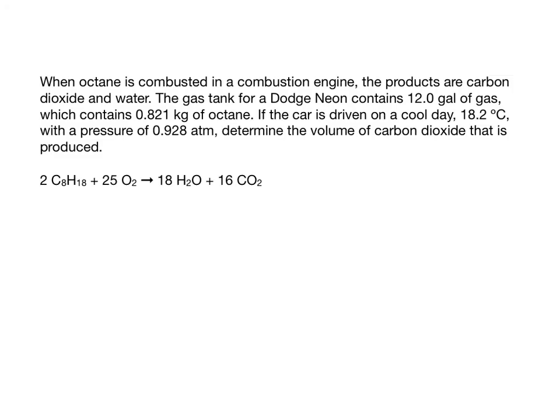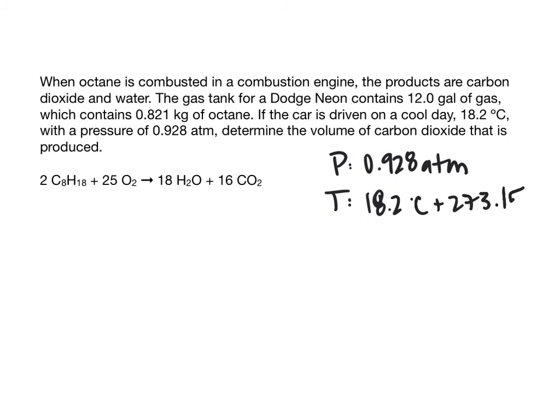Another example: when octane undergoes combustion, the products are carbon dioxide and water. A gas tank for a Dodge Neon contains 12 gallons of gas with 0.821 kilograms of octane. If the car is driven at 18.2 degrees Celsius and 0.928 atmospheres, what is the volume of carbon dioxide produced? Pressure is 0.928 atmospheres and temperature is 18.2 plus 273.15 = 291.35 Kelvin. We're solving for volume.